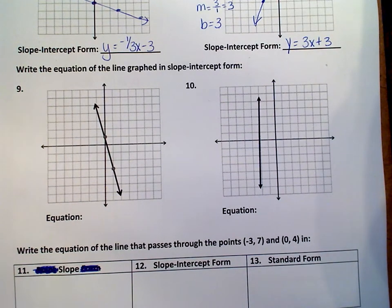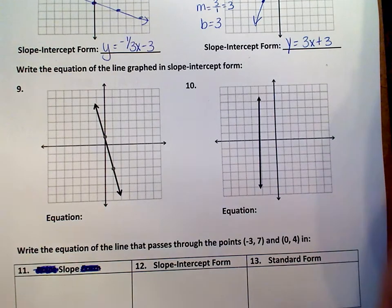Number 9 is going to be very similar to what we did on number 8 after we plotted the points. We're going to look at the graph, pick out the y-intercept, and pick out the slope.